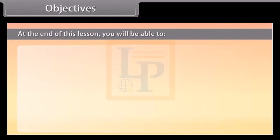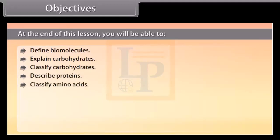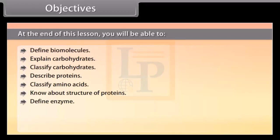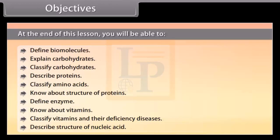Objectives: At the end of this lesson, you will be able to define biomolecules, explain carbohydrates, classify carbohydrates, describe proteins, classify amino acids, know about the structure of proteins, define enzymes, know about vitamins, classify vitamins and their deficiency diseases, and describe the structure of nucleic acid.